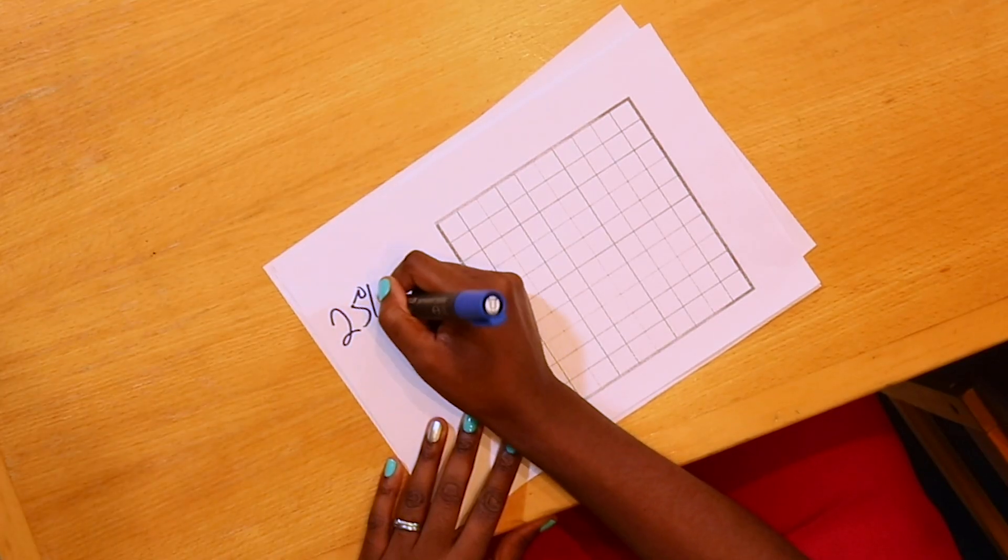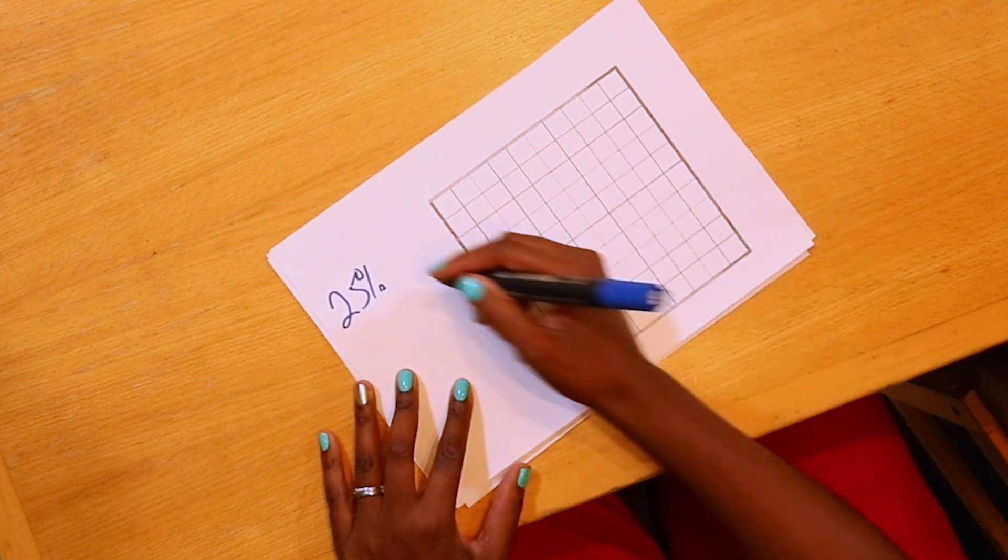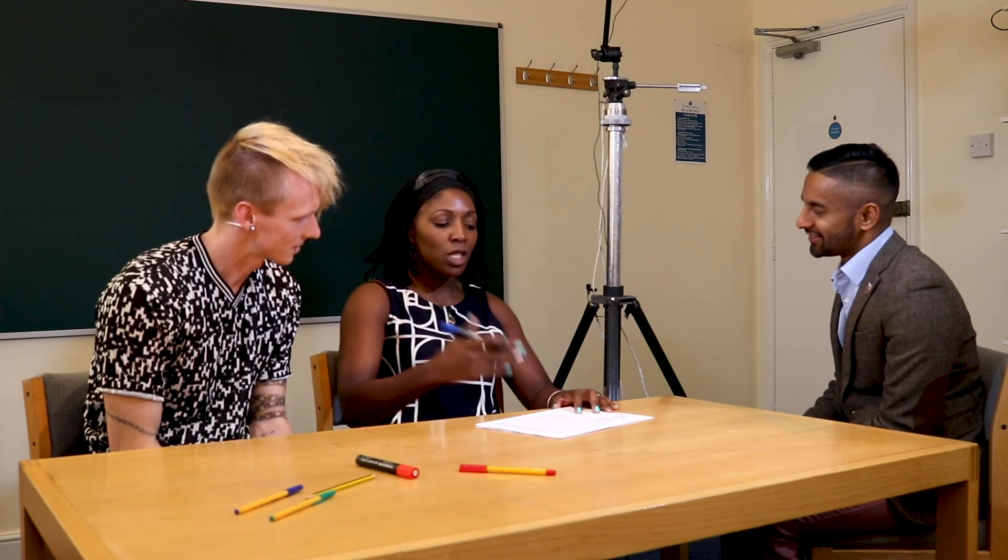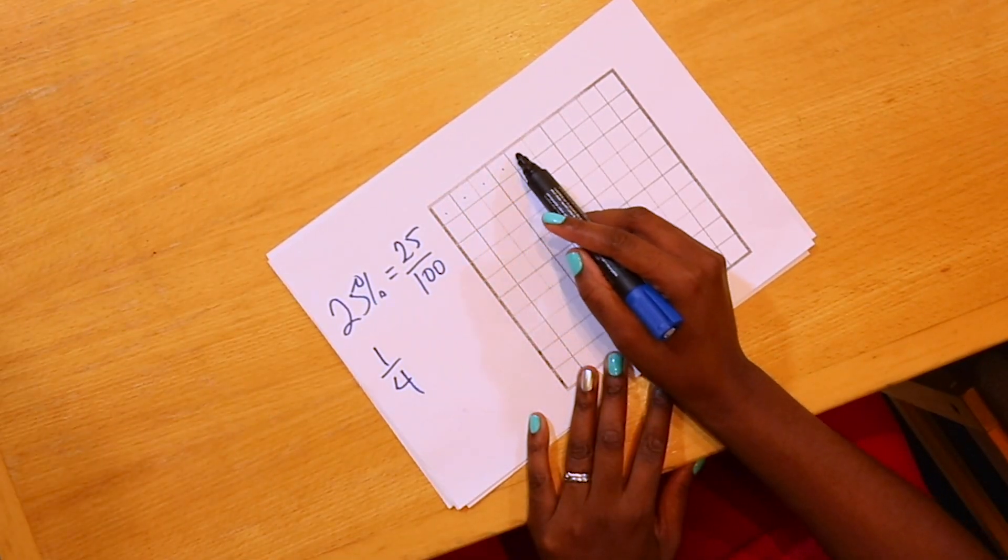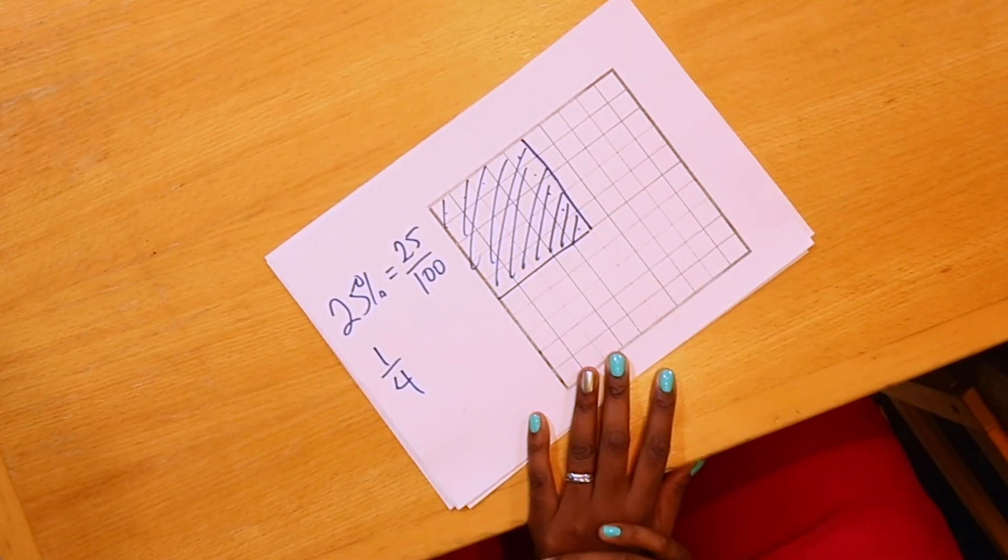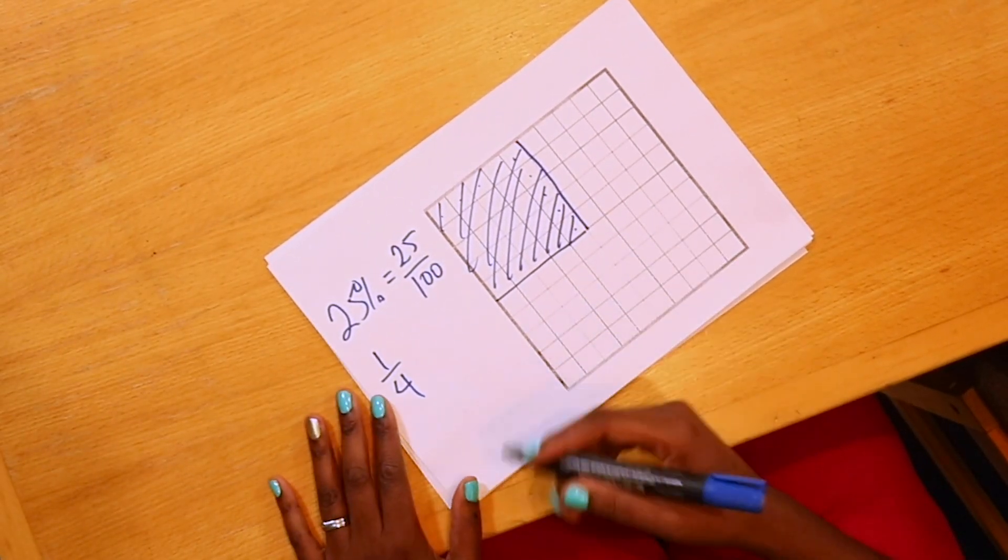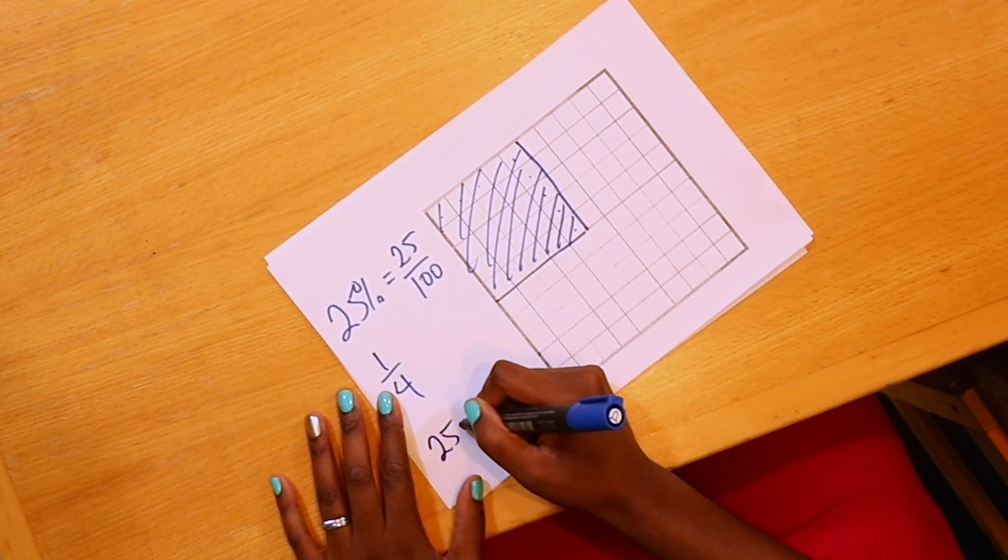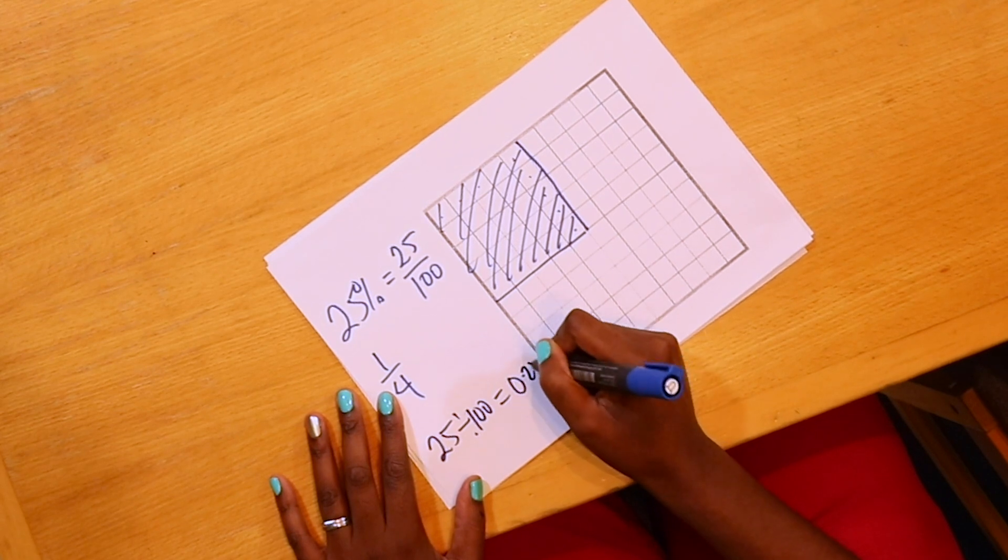So another percentage I think is very useful for you to know is 25%. So as a fraction, what's 25%? 25 out of 100, which you might also know as one quarter. And so to show you why that is the case, if I count out 25 squares - so 1, 2, 3, 4, 5, and then 1, 2, 3, 4, 5, because it's a square number. So that's 25%, which is the same as a quarter of that whole. And then as a decimal, you do 25 divided by 100, which is equal to 0.25.